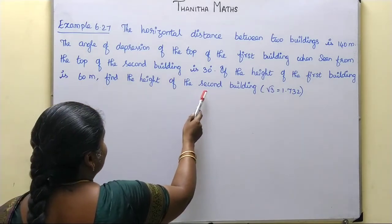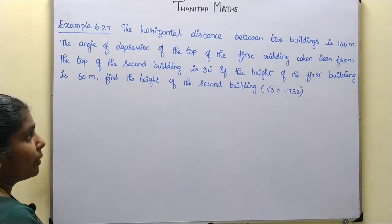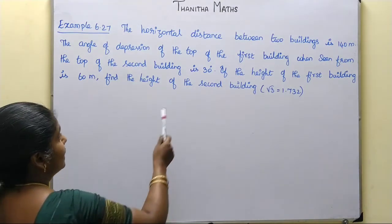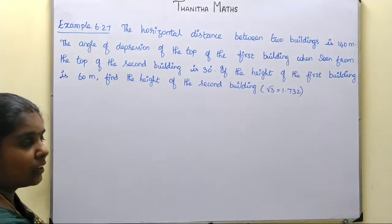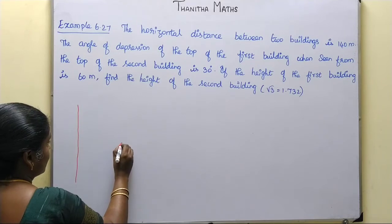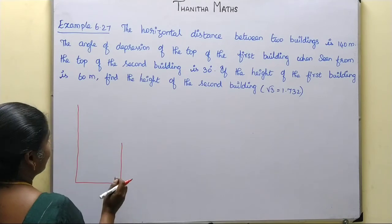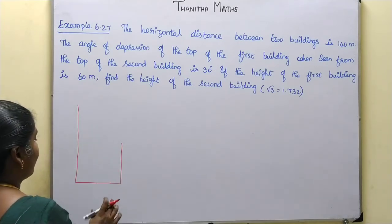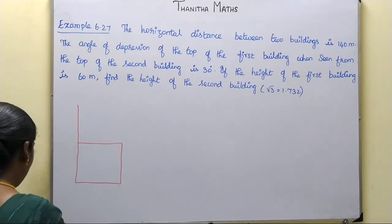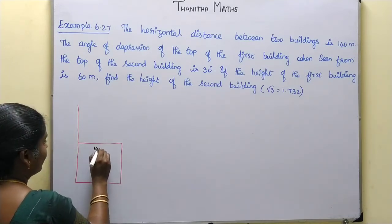We need to find the height of the second building. There are two buildings — one is smaller. The horizontal distance between the two buildings is 140m.